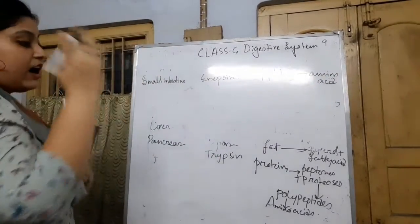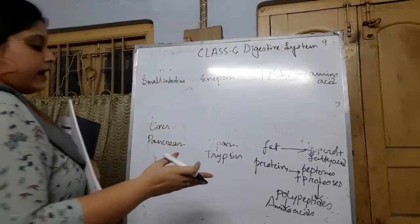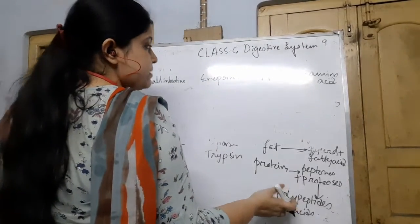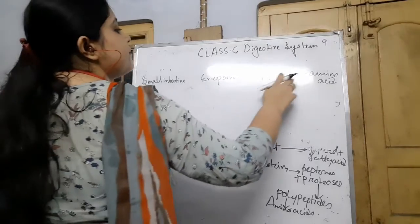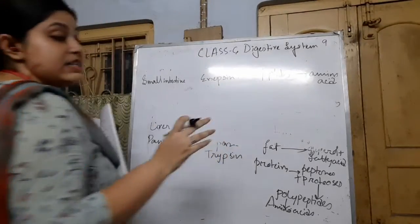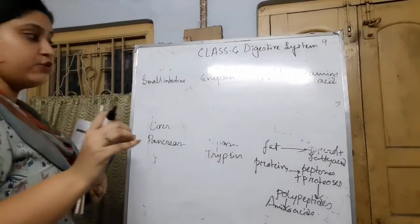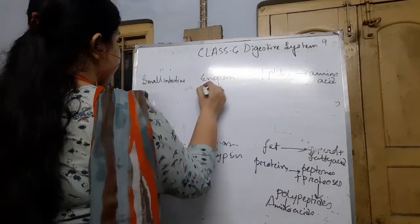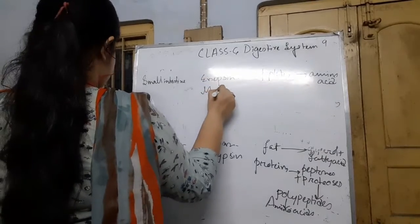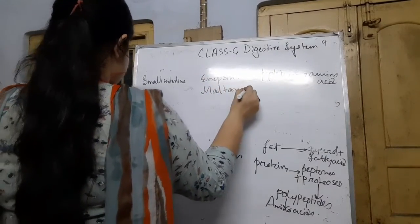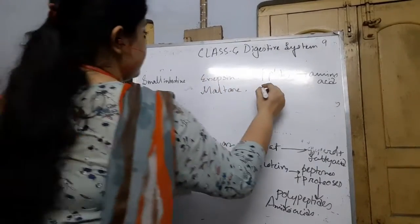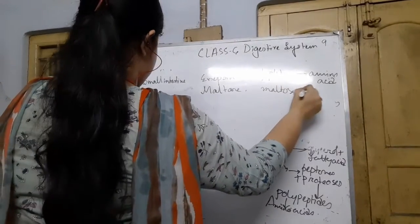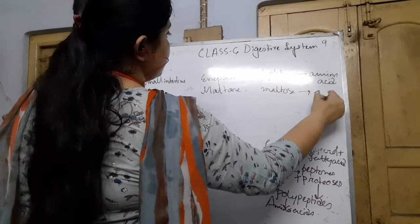The half already done by the pancreatic juices involves taking polypeptides and forming amino acids. Also, maltase is present, which changes maltose molecules into glucose.